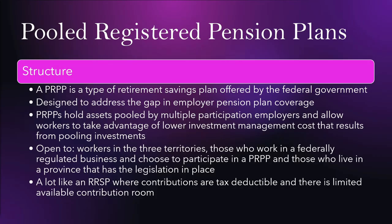Pooled registered pension plans (PRPPs) are a type of retirement savings plan offered by the federal government, designed to address the gap in employer pension plan coverage. PRPPs hold assets pooled by multiple participating employers, allowing workers to take advantage of lower investment management costs from pooling. They are open to workers in the three territories, those in federally regulated businesses who choose to participate, and those in provinces with applicable legislation. Like an RRSP, contributions are tax-deductible and there is a contribution room limit.